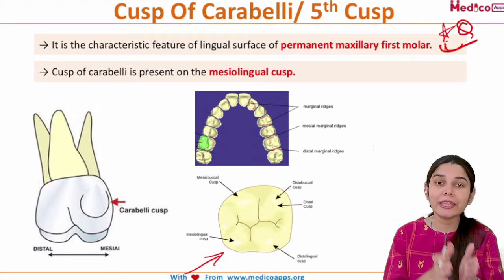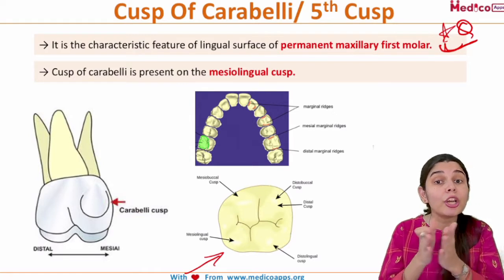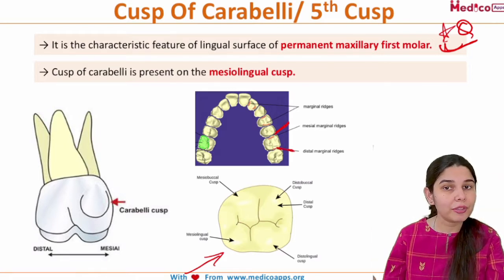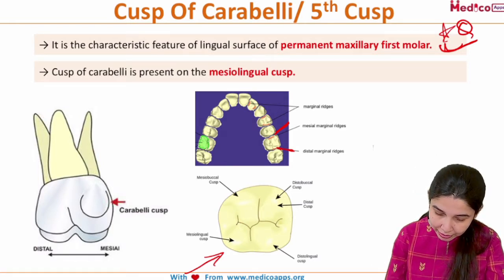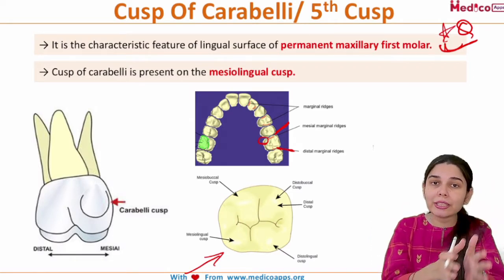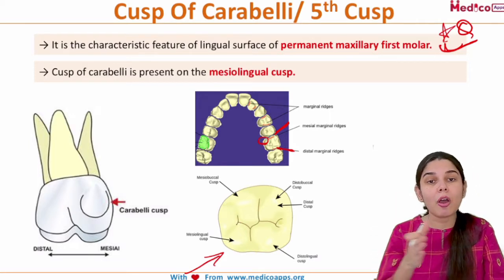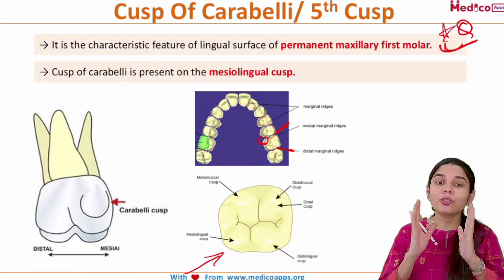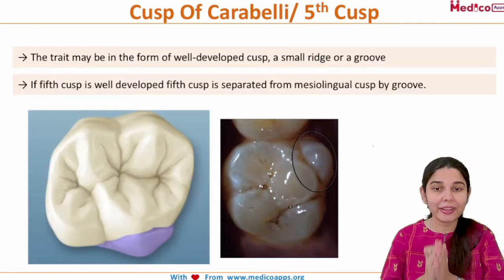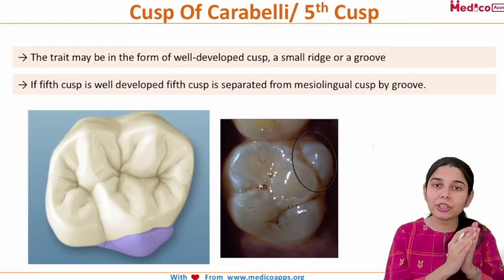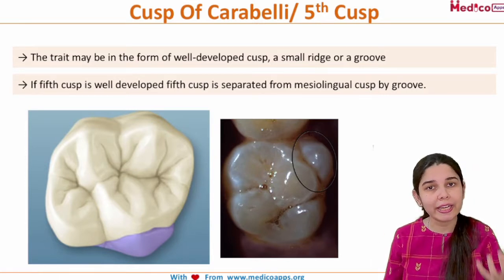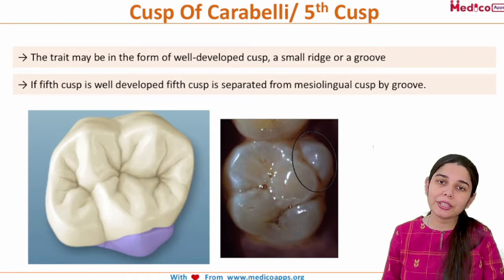Specifically, the Cusp of Carabelli is present on the mesiolingual cusp — that means towards the mesial section on the lingual side of the permanent maxillary first molar. So this cusp is present on the mesial aspect on the lingual section of this tooth. The Cusp of Carabelli is a trait which may be formed as a well-developed cusp, or it can also be present as a small ridge or a groove.